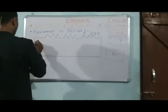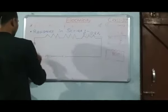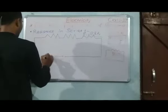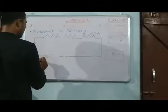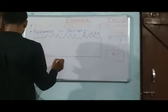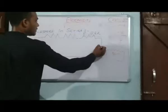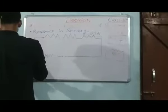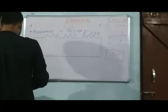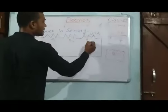Now we have a closed circuit having a battery with positive and negative terminals, having a switch on and off, and in which resistors R1, R2 and R3 are placed.